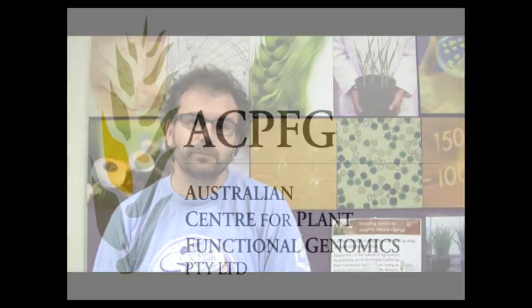In addition, now that we know that this AVP1 gene works, we can find the wheat and barley equivalents of this gene and use this in selective breeding programs to produce a non-GM plant as well.